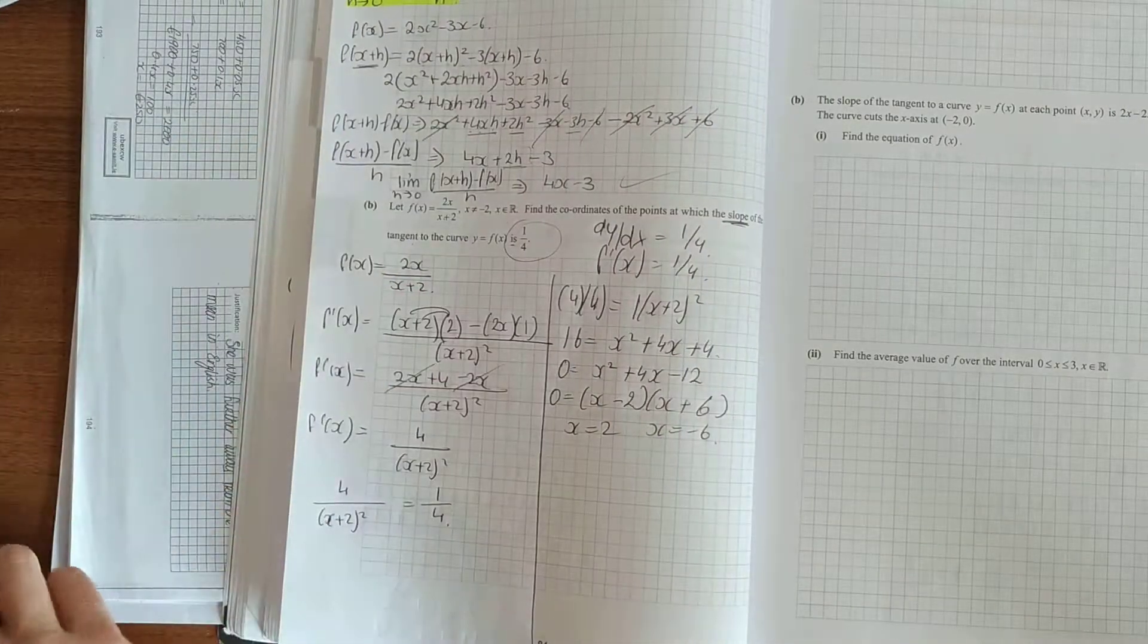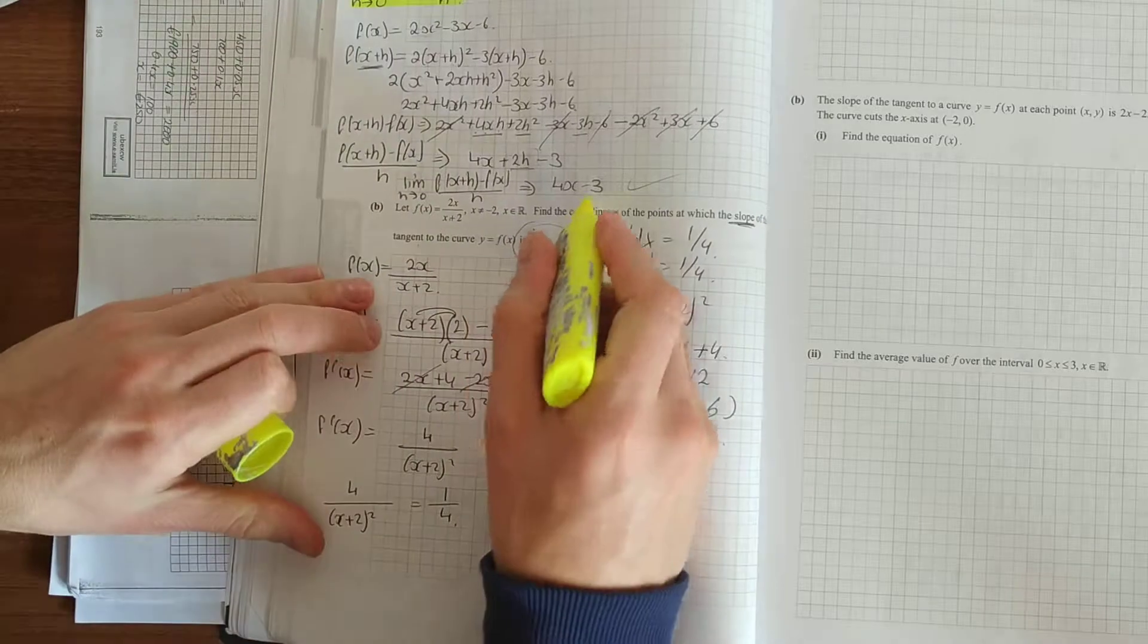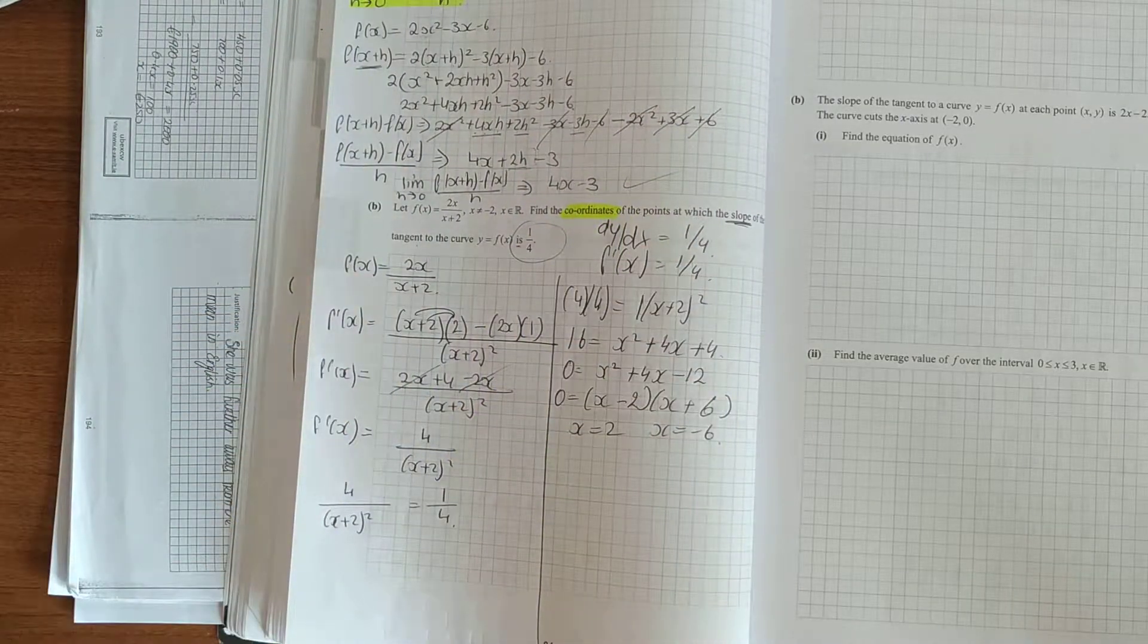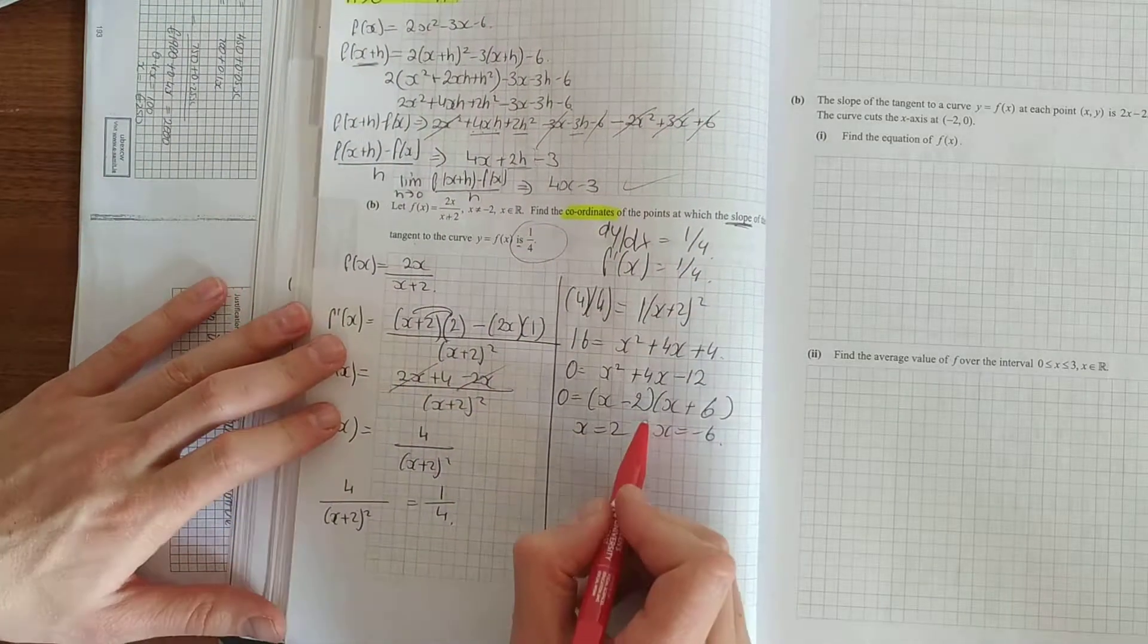Now technically we haven't answered that. Because again, it says find the coordinates. Do not do all that hard work and then throw away handy marks. So x is 2, x is minus 6. For coordinates you need an x and a y.